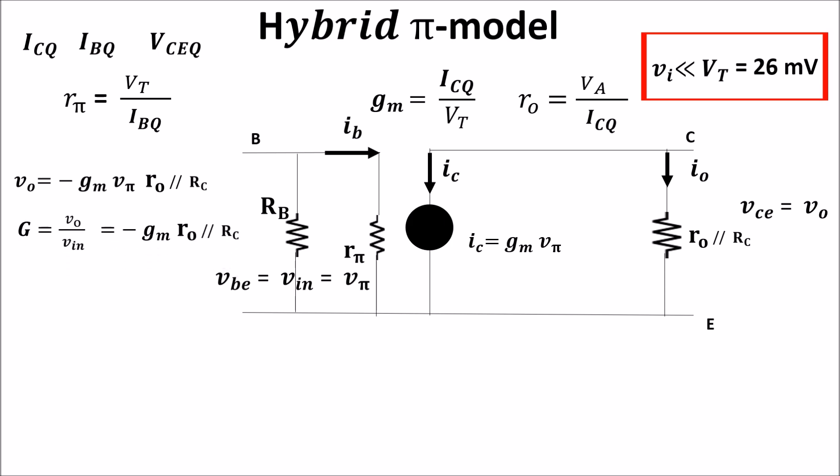After, early resistance RO is very high. It can be around 50 kilo ohms. So if RO is much more than RC, the gain becomes this.